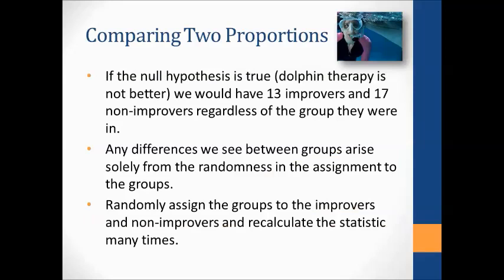If the null hypothesis is true and dolphin therapy is not better, we would have those 13 improvers and 17 non-improvers regardless of which group they were assigned to. Any differences in those groups arise solely from the randomness of the assignment. So essentially we can randomly assign the groups to the improvers and non-improvers — that's basically what we did with the cards.